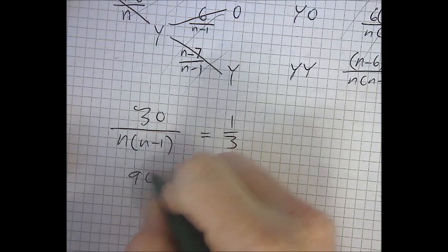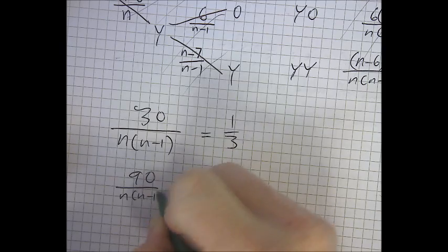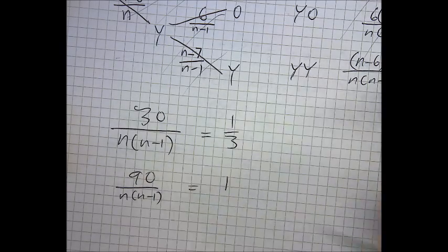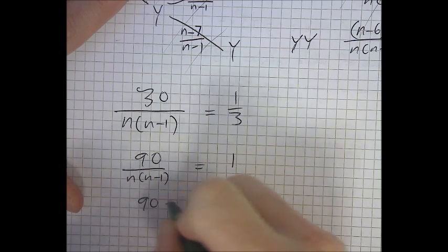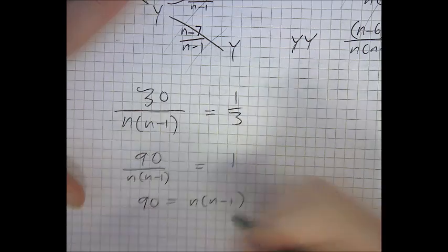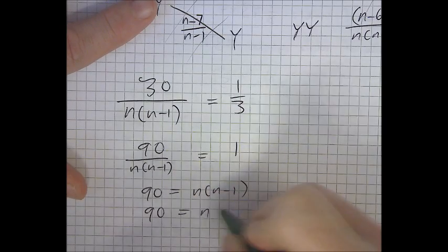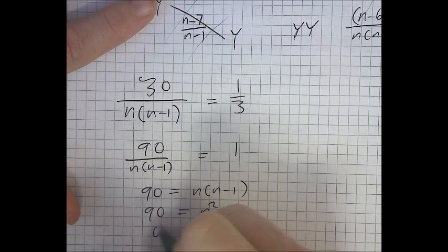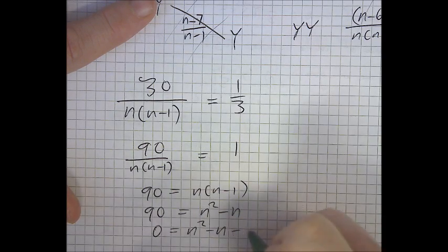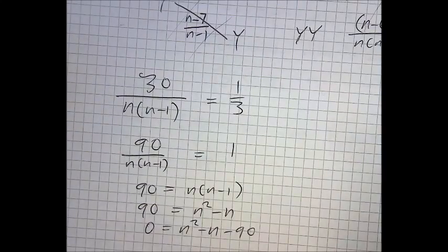I'm going to times both sides by 3. And I'm going to times both sides by N times N minus 1 in a bracket. Expand the bracket. And now subtract 90 from both sides. And that's part A.